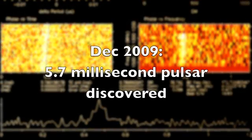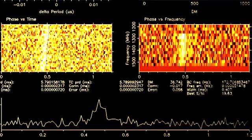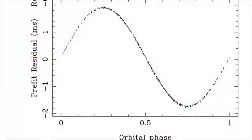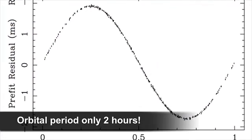In 2009 a 5.7 millisecond pulsar was discovered on our supercomputers and our colleagues at central bank soon realized that this star was orbiting another object every two hours.